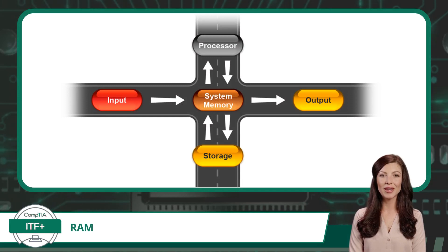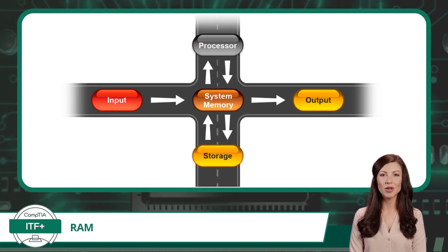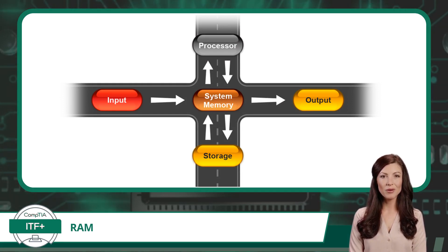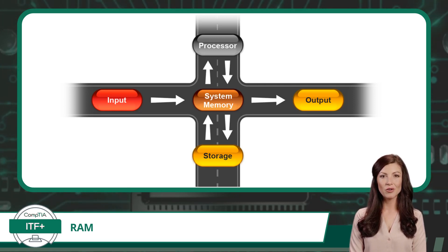System memory is different from long-term storage devices such as hard drives because it provides much faster access to data. When the processor needs to receive or output data, it can interact directly with the system memory, which allows for faster execution of instructions by the processor.